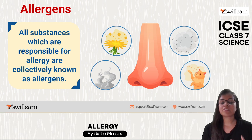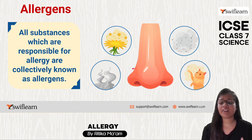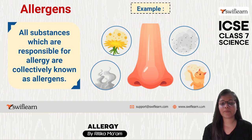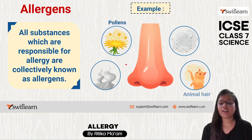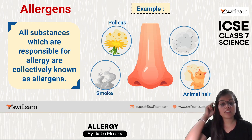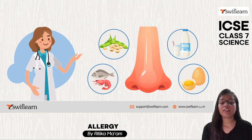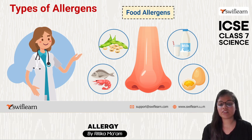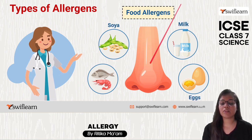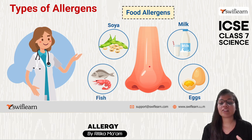The substances responsible for causing allergy are known as allergens. These can be flower pollens, animal hair, smoke, house dust, and so on. Some people are allergic to animal hair, others cannot stand smoke, and others are uncomfortable with house dust.